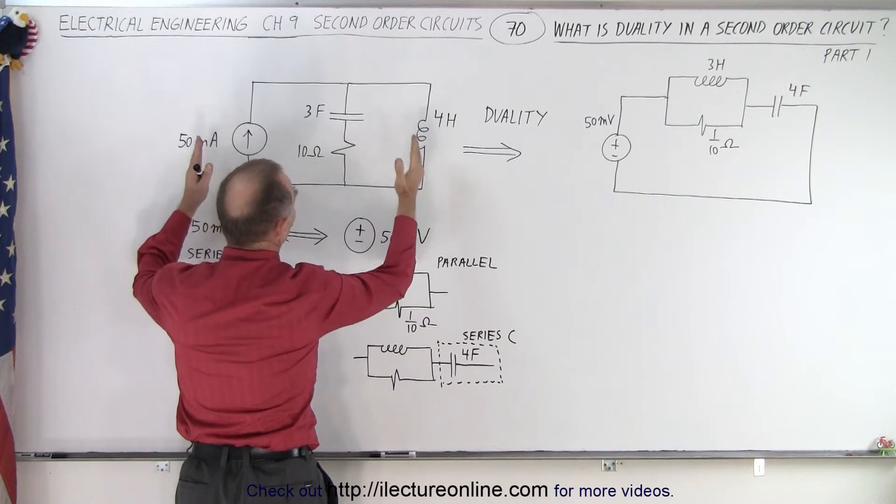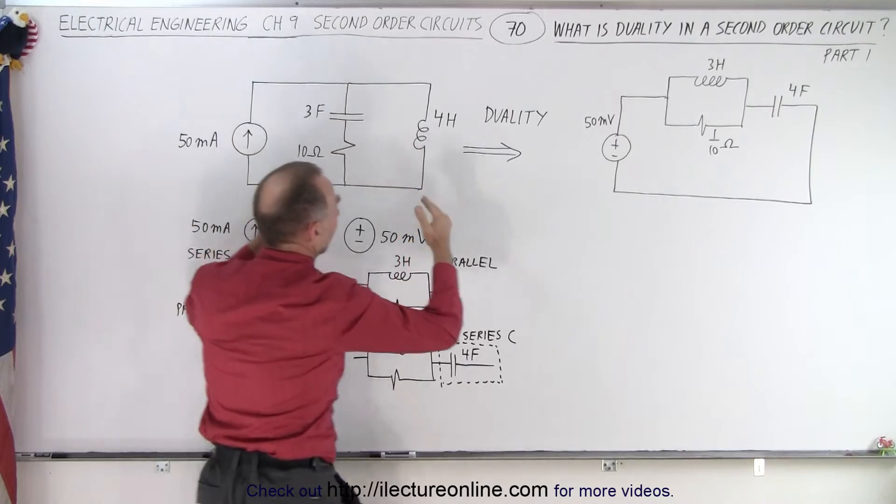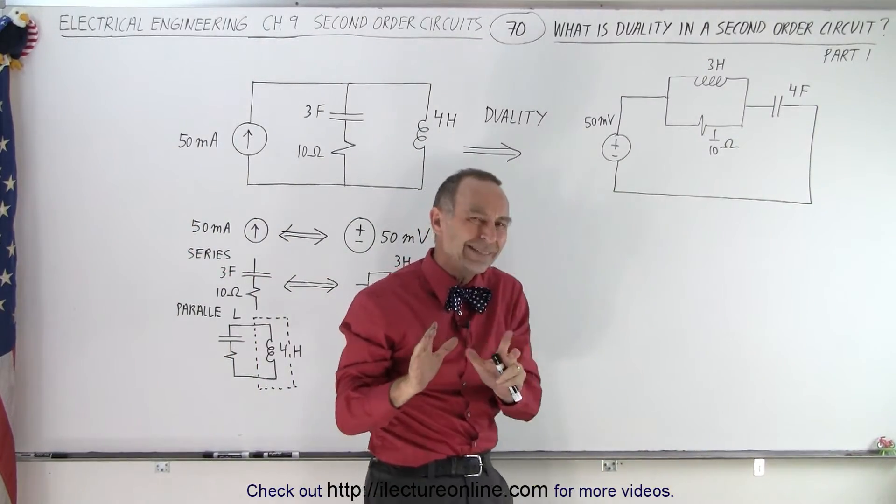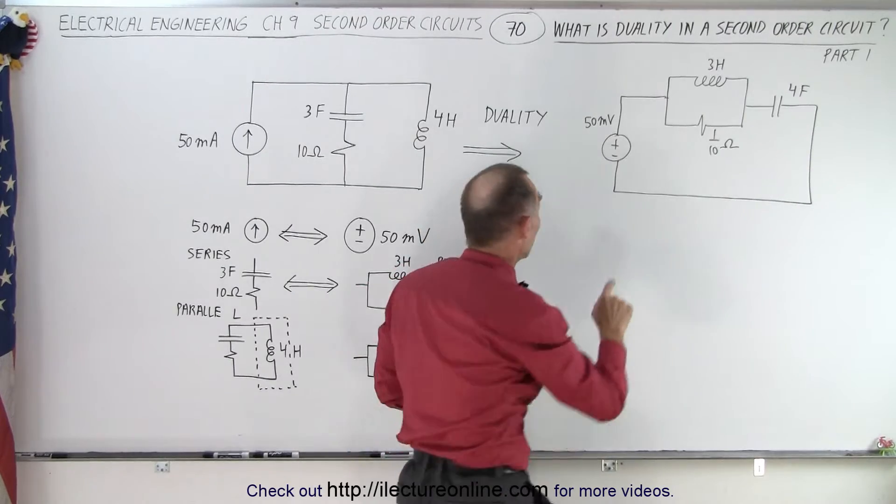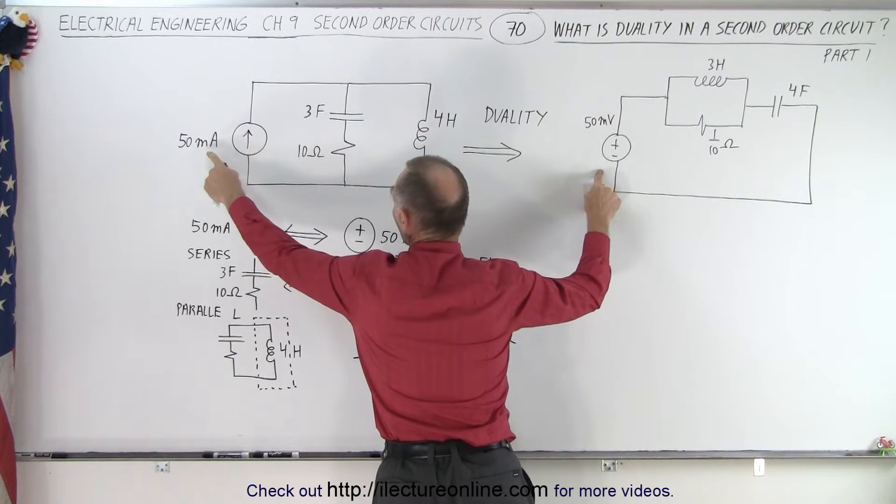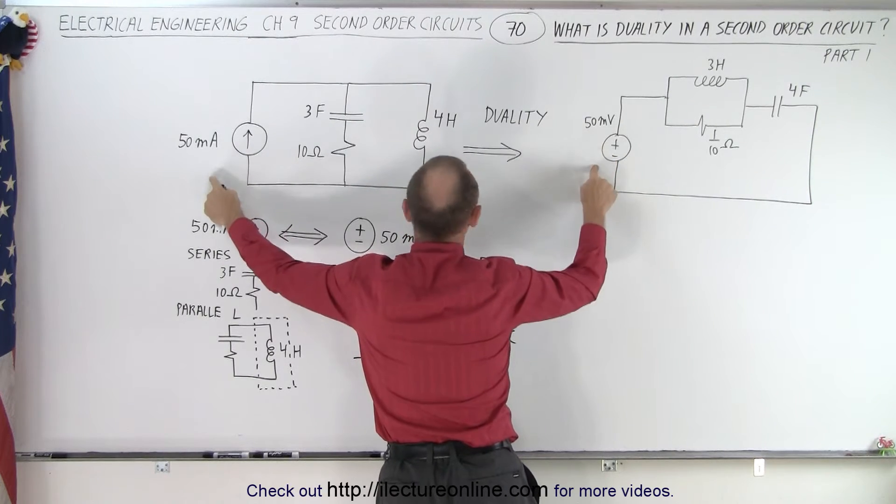We're claiming that this is exactly the same circuit as this circuit. Now when we say exactly the same, I should really say equivalent circuit. We'll find out why. But replacing the current source by a voltage source. Notice we go from 50 milliamps to 50 millivolts.